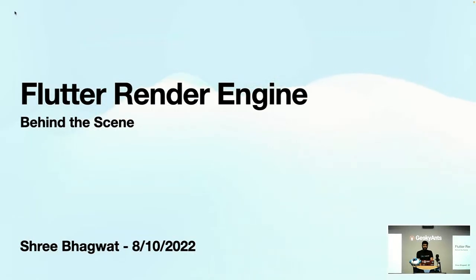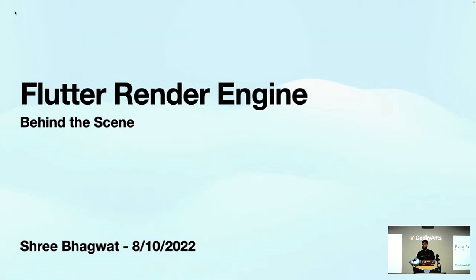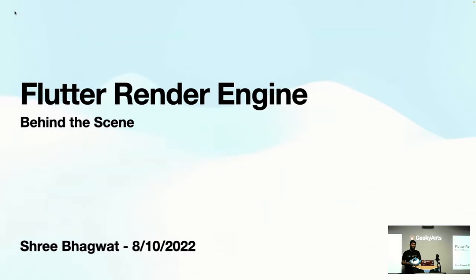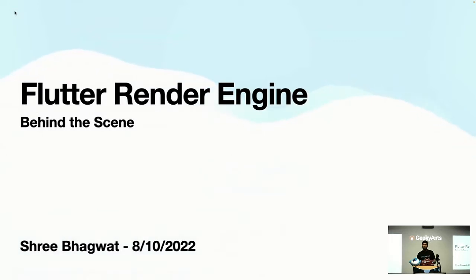My today's topic is Flutter render engine behind the scenes. We all are Flutter developers and we all like to develop good quality applications in Flutter, which uses a single code base to render our application on web and mobile. From day one we've been rendering Flutter applications and it's really fast — but how does Flutter actually do this? How does Flutter actually render the application on screen? This is my topic for the day. It is an advanced topic and I've tried my best to reduce the theory part.